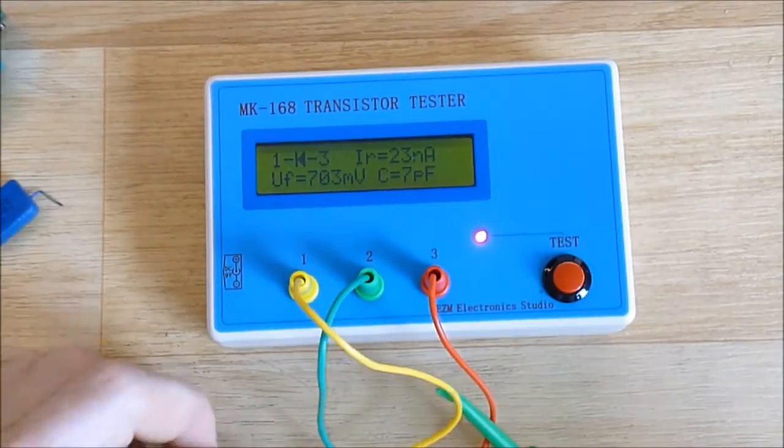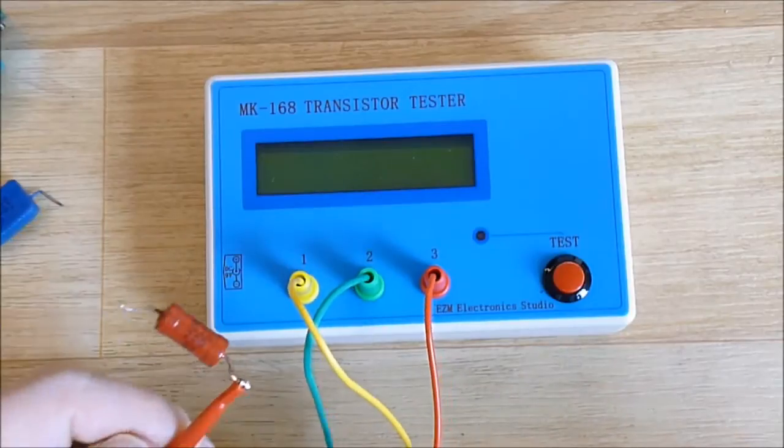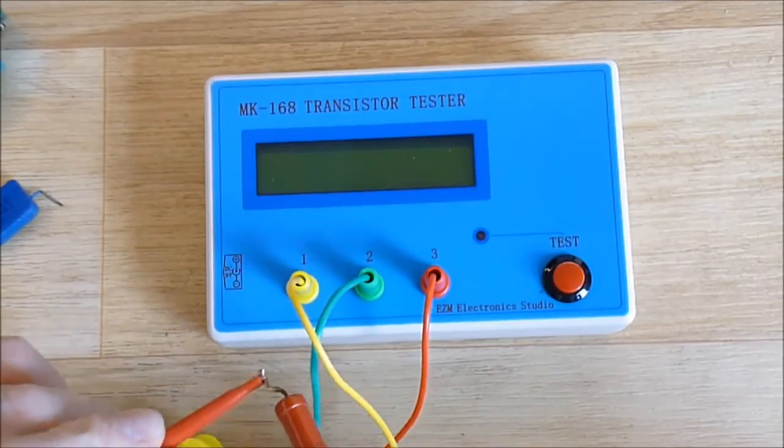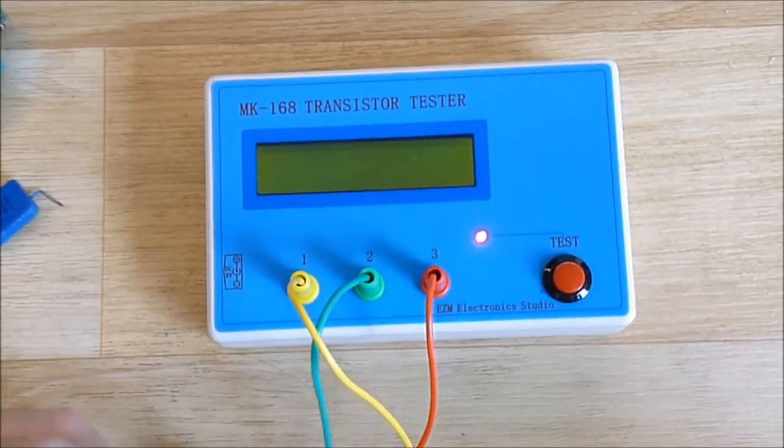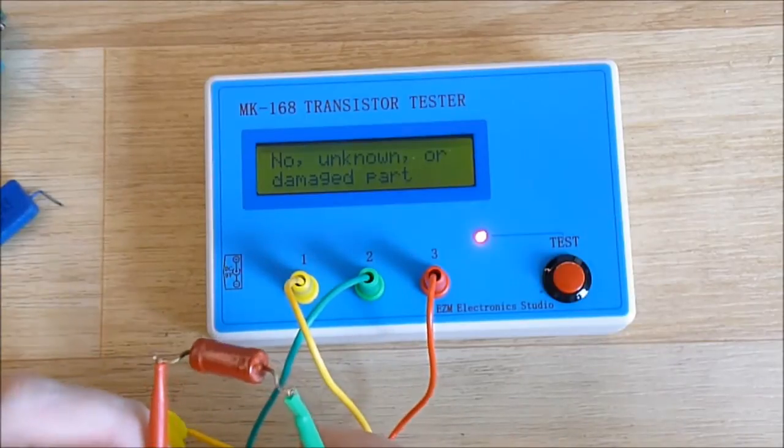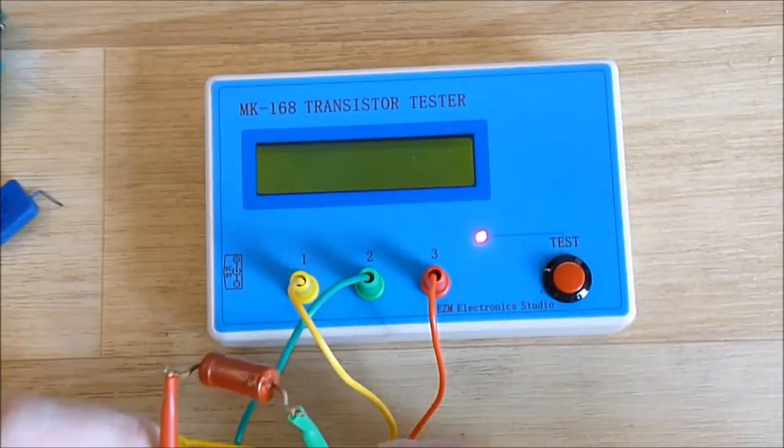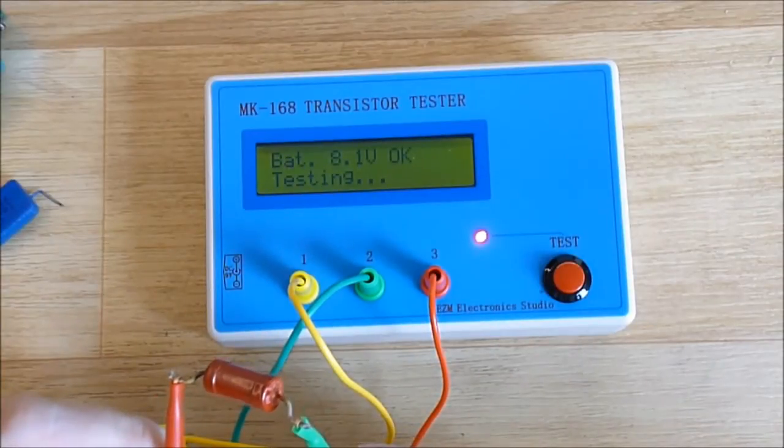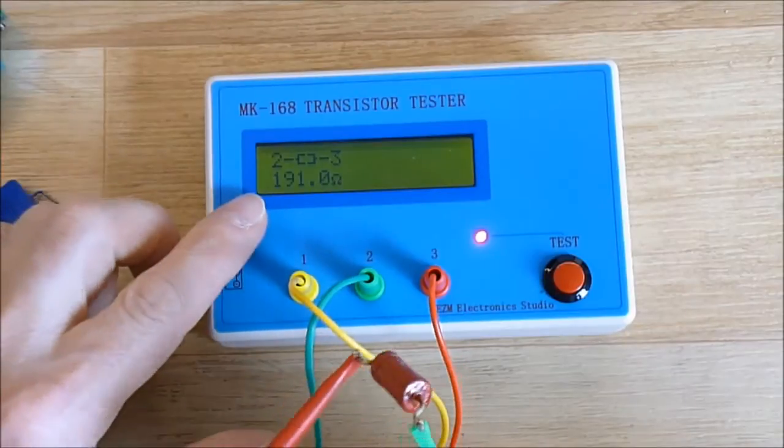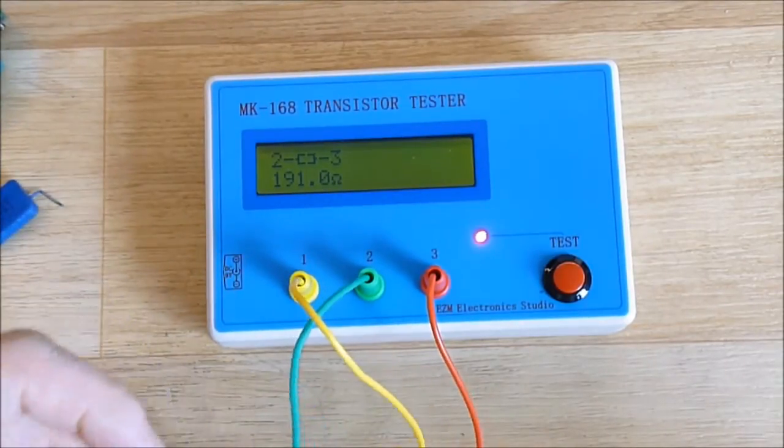I can do resistor test too. This one is a 200 ohms resistor. It gives 191 ohms for 200 ohms, and it's okay.